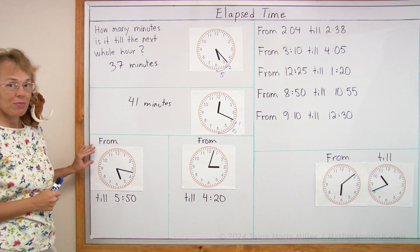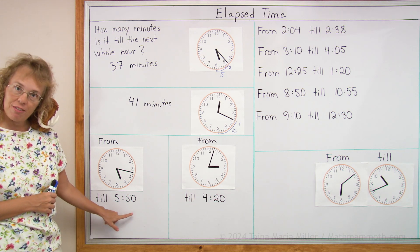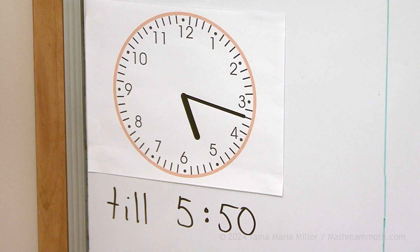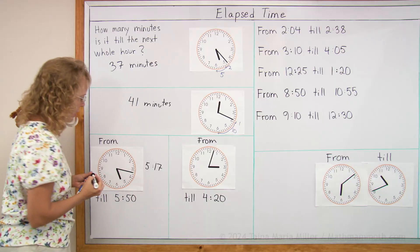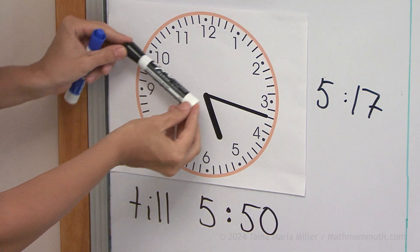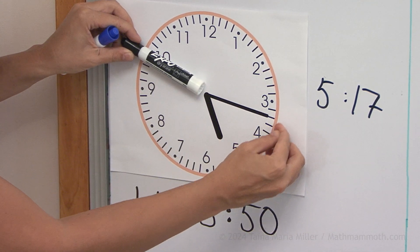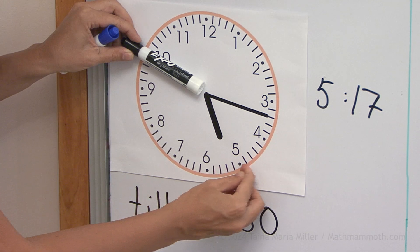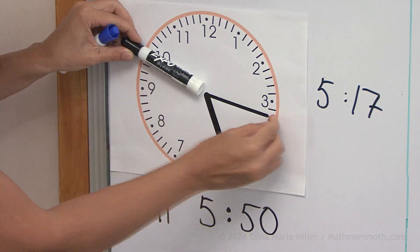Over here, how many minutes pass from this time till 5.50? What time is it now? You're telling me it is 5.17. I thought he was gonna say it's supper time! 5.50 will be when the minute hand is here. So we can again imagine moving the minute hand: 3 minutes, and then 5, 10, 15, 20, 25, 30. So 30 minutes and 3 — 33 minutes.